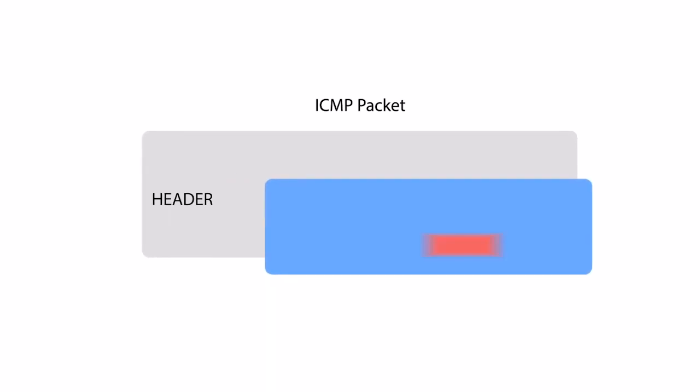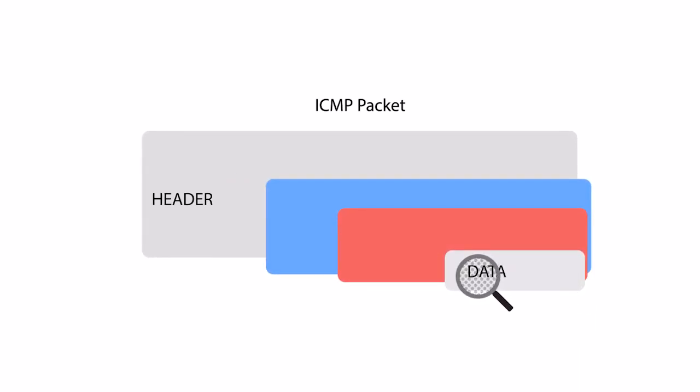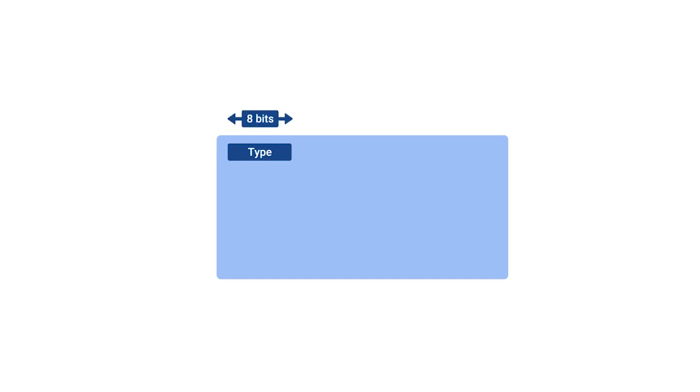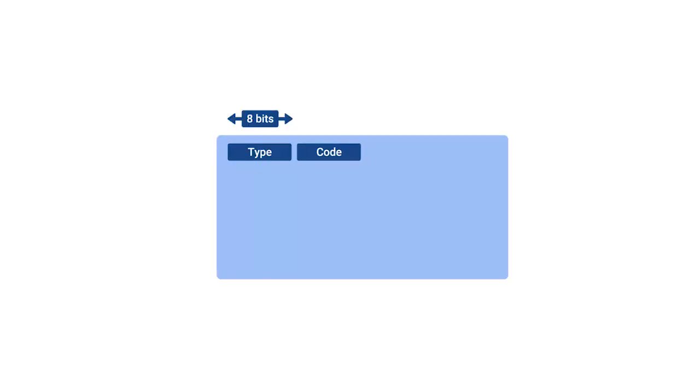The makeup of an ICMP packet is pretty simple. It has a header with a few fields and a data section that's used by a host to figure out which of their transmissions generated the error. The first field is the type field — eight bits long — which specifies what type of message is being delivered. Some examples are destination unreachable or time exceeded. Immediately after this is the code field, which indicates a more specific reason for the message than just the type. For example, of the destination unreachable type, there are individual codes for things like destination network unreachable and destination port unreachable.